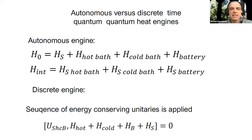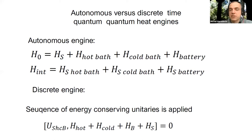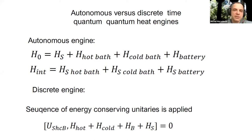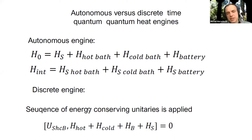Autonomous engines are a bit hard to analyze. One can set some particular Hamiltonian and try to get parameters like efficiency, but it's not easy to think of optimal engines. To better understand how these micro-engines function and to understand the thermodynamics of microsystems, it's good to consider discrete engines.